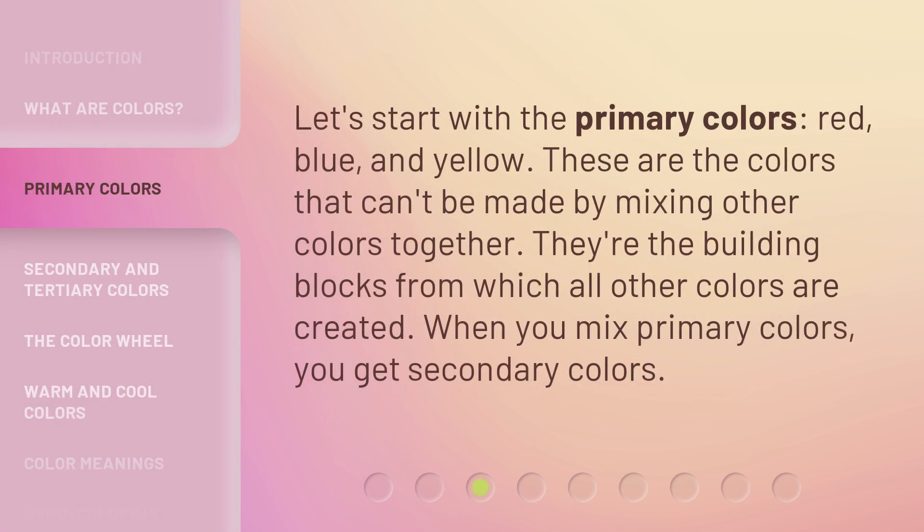Let's start with the primary colors: red, blue, and yellow. These are the colors that can't be made by mixing other colors together. They're the building blocks from which all other colors are created. When you mix primary colors, you get secondary colors.